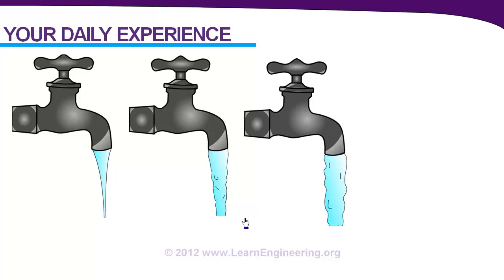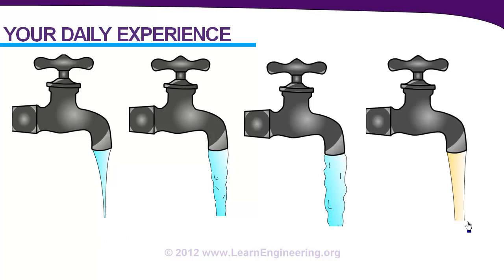Finding number one: effective turbulence increases as you increase the velocity of flow. Now let's do one more experiment. Here we use water as the working fluid, but now let's take a more viscous fluid — let's take oil. Here the flow rate is high, almost similar to the second case, yet the flow is not turbulent; rather it is laminar. As you use a working fluid which is more viscous, the chance of turbulence decreases. Finding number two: as viscosity of the fluid increases, effective turbulence decreases.